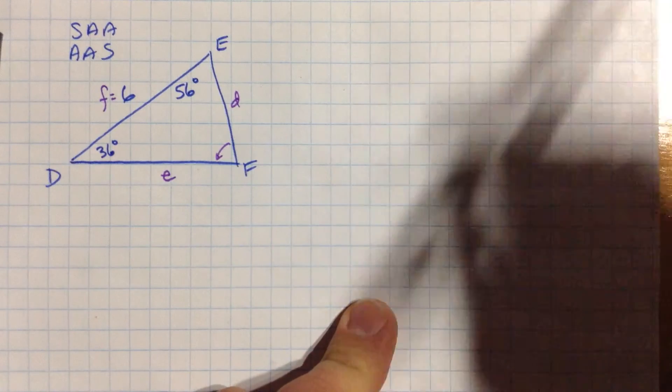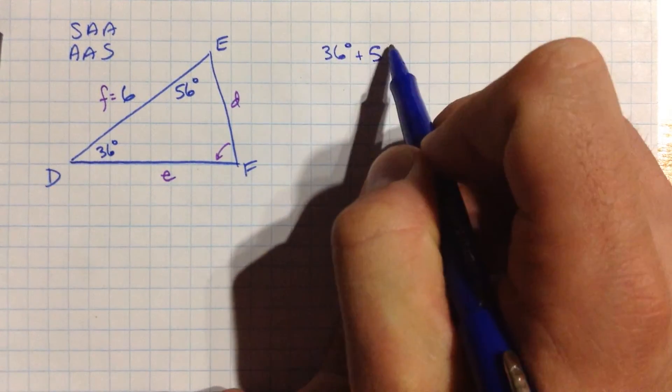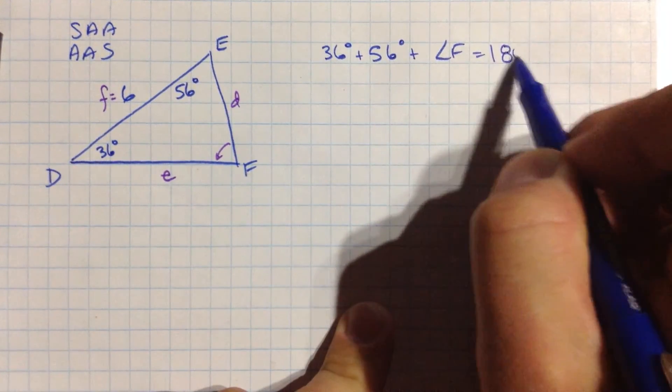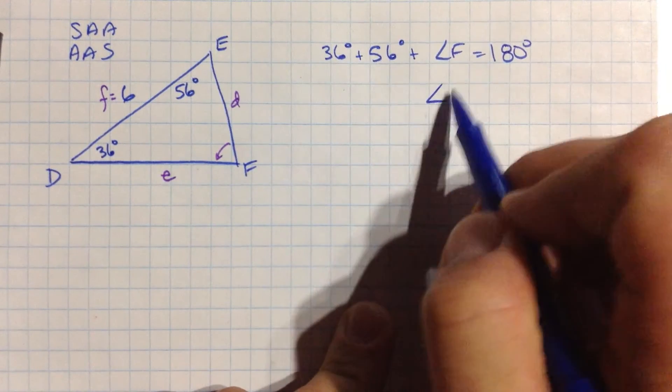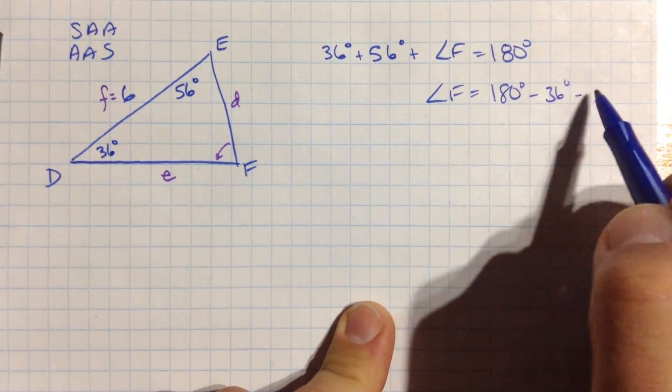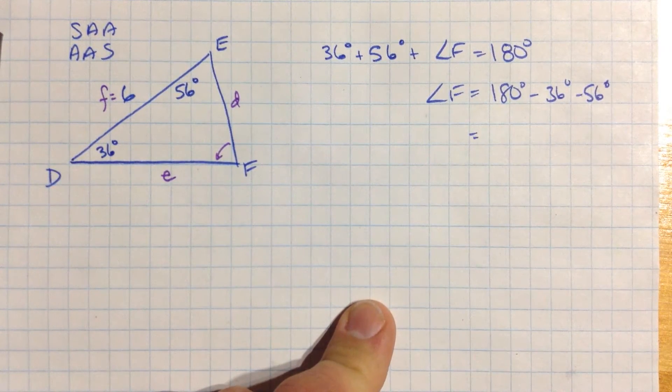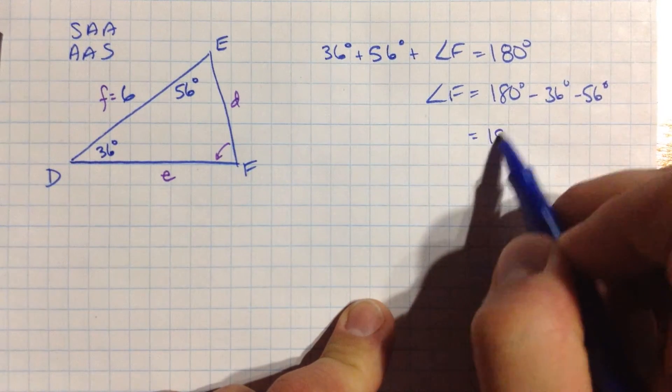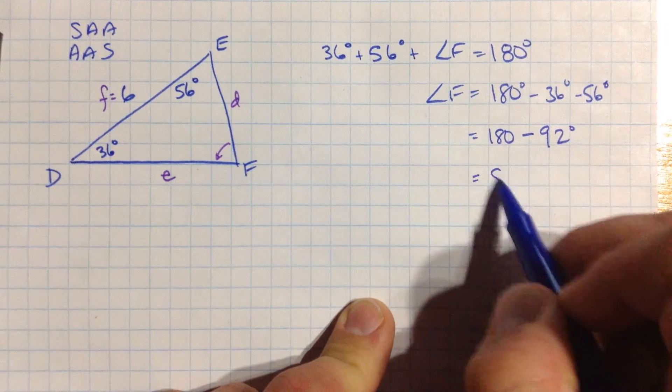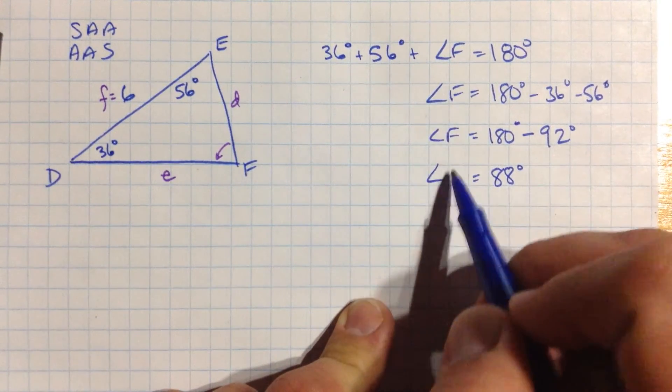Well, I'm pretty close though, because I know something about triangles. Again, I know that 36 degrees plus 56 degrees plus angle f is equal to 180 degrees. Or f is 180 minus 36 minus 56. That's pretty handy. So that's 180 minus, that's 92, right? So that means it's 88 degrees. Angle f is 88 degrees. Sweet.